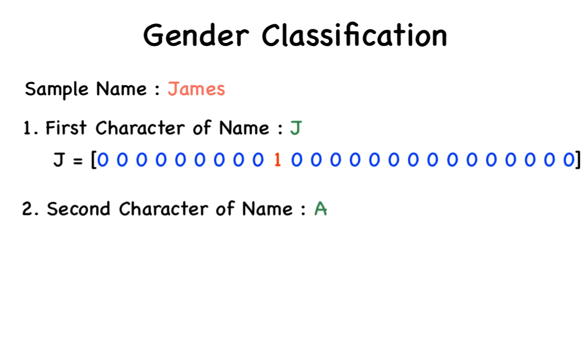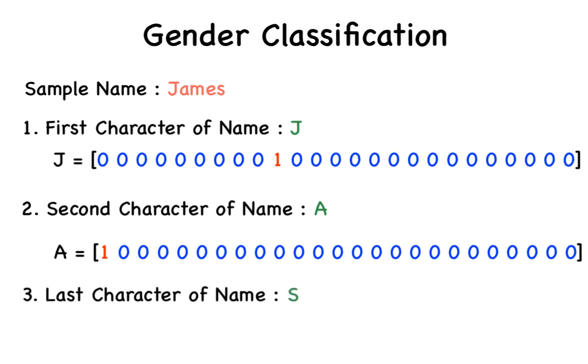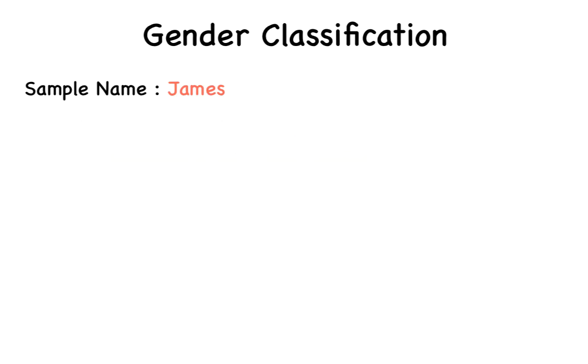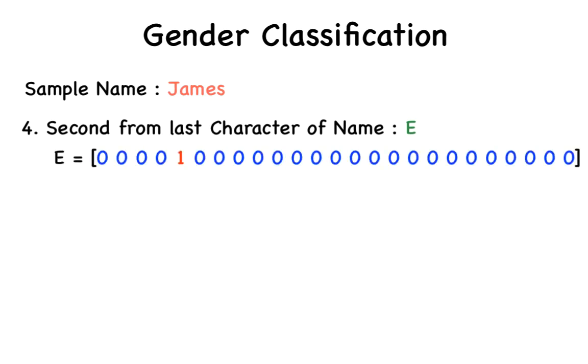So we have generated 26 features from this first characteristic, that is first character of name. Now the second characteristic is the second character of the name. This also has 26 possibilities, and is hence represented by a 26-dimensional one-hot feature vector. The specific vector in this case is the first entry as 1, and the rest are zeros. This represents A. Likewise, the third characteristic, which is the last character of the name, is a 26-dimensional vector with the 19th entry as 1. This represents the letter S. The fourth characteristic is the second from last character. This has the fifth entry as 1 to represent E, and this is also a 26-dimensional vector.